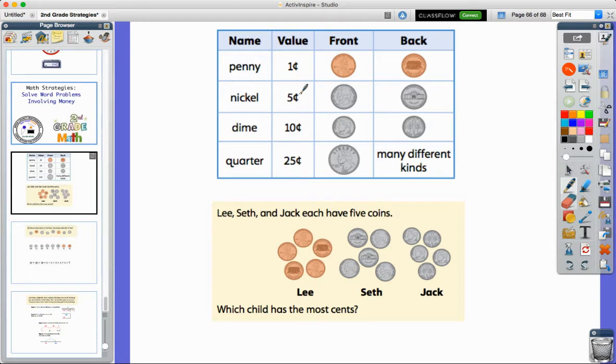Five pennies equals a nickel, five cents, that has Thomas Jefferson, one of our other presidents on there, and on the back it has his house, Monticello.